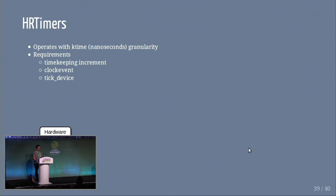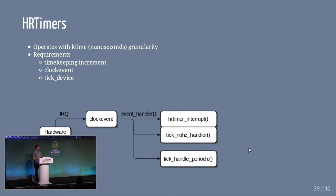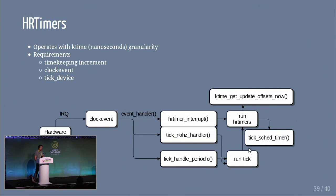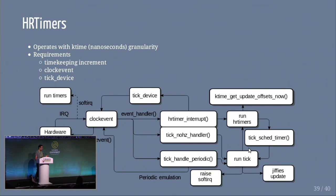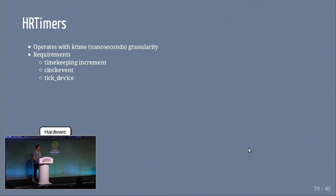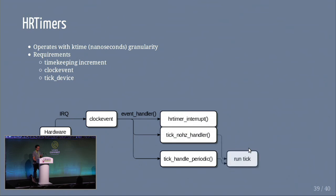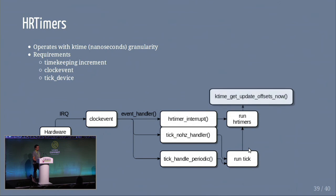For HR timers it's very similar — everything still flows from the hardware event raising an interrupt and calling the event handler. The difference is you have to be in the top two event handler boxes to run HR timers. If you're in the no-hertz handler, we run the tick and then run the HR timers. When it's the HR timer interrupt, we run the HR timers, and then tick calculations happen from an HR timer callback, which is the tick sched.